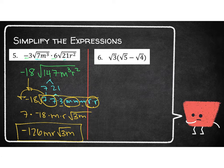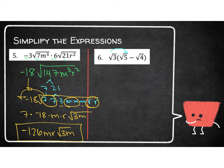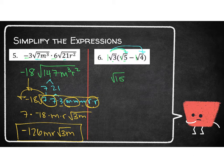Now let's talk a little differently about distribution. If I take a look at multiplying a radical times something inside parentheses, I have to distribute. That means the square root of 3 needs to be multiplied by both the square root of 5 and by the square root of 4. There's nothing on the outside of any of these radicals, so I don't need to worry about the outsides. Now I'm going to put the insides together: 3 times 5 gives me the square root of 15, and 3 times 4 gives me the square root of 12.